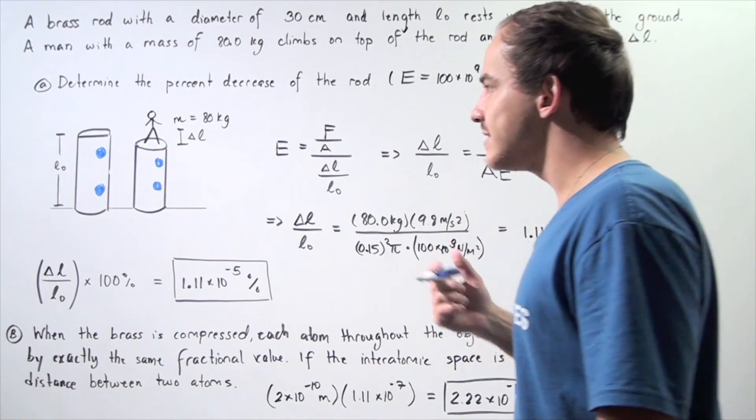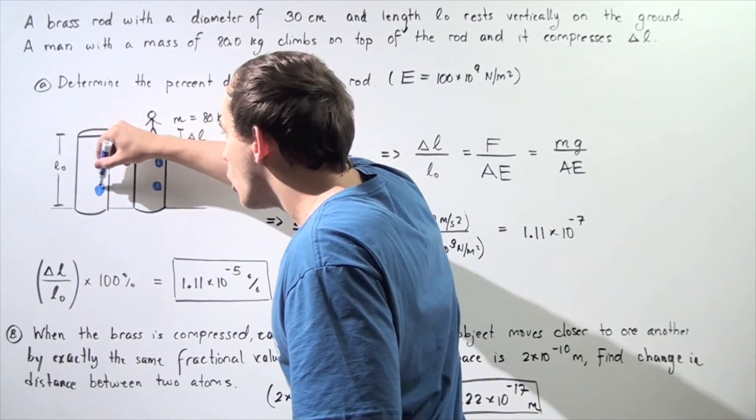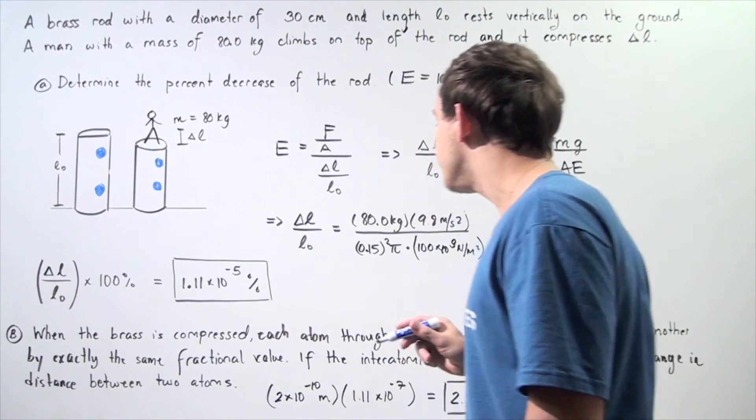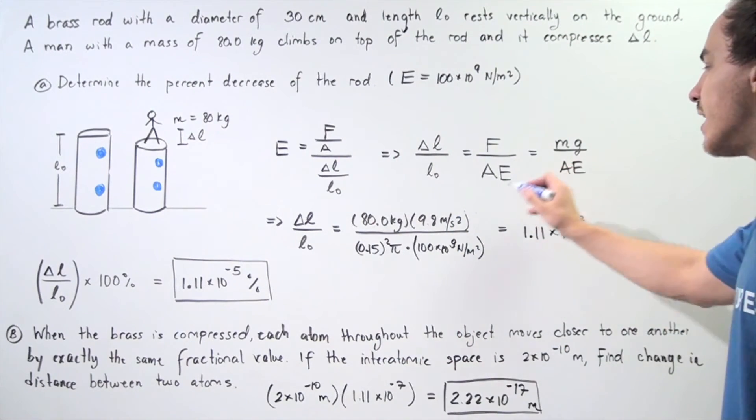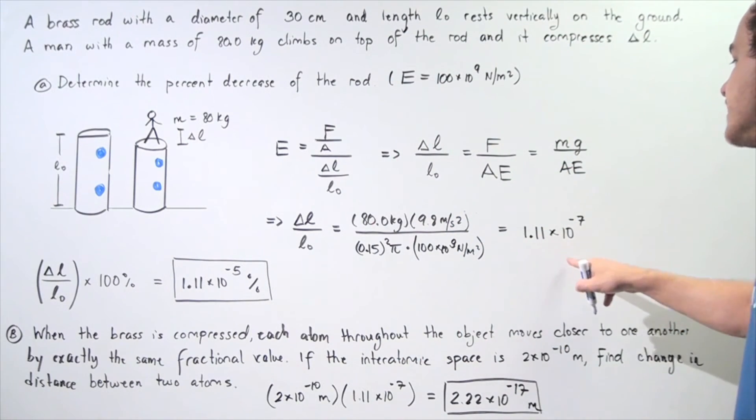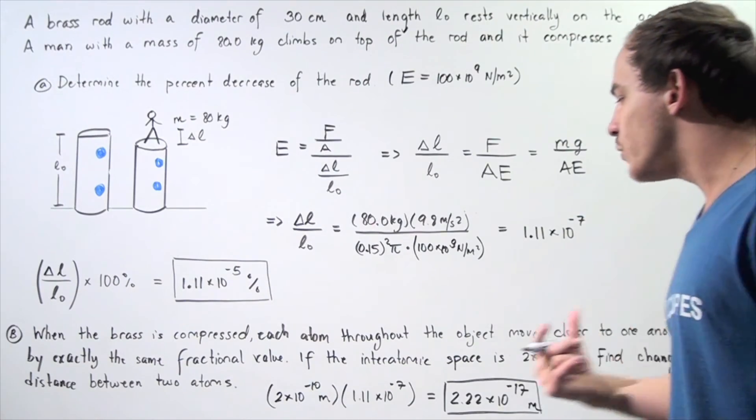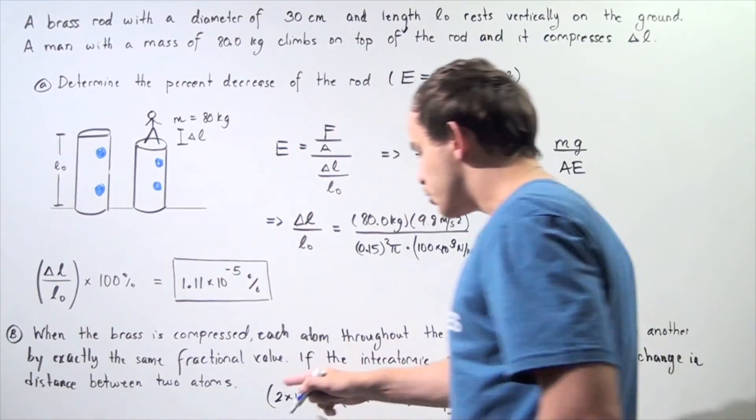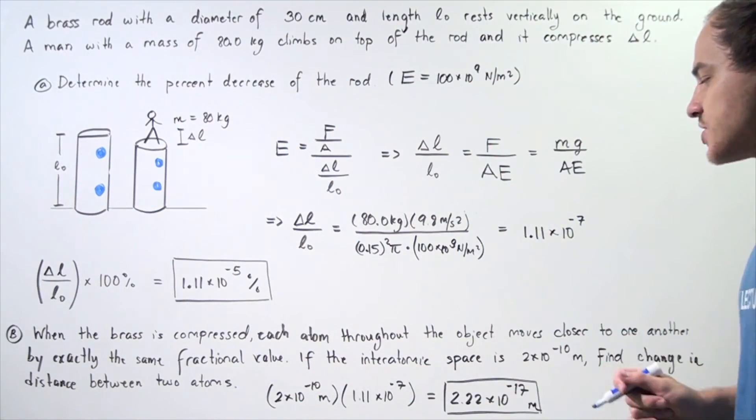Well, to calculate this distance, we simply take this whole distance and multiply by the fractional value, 1.11 times 10 to the negative 7. So, we take our distance, so 2 times 10 to the negative 10 meters,